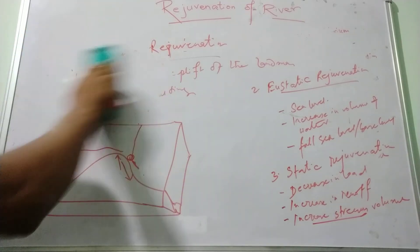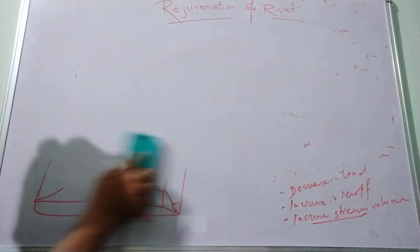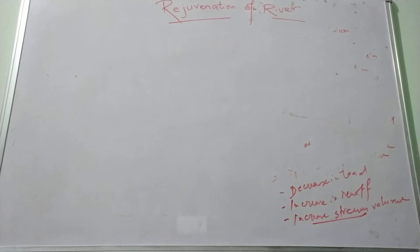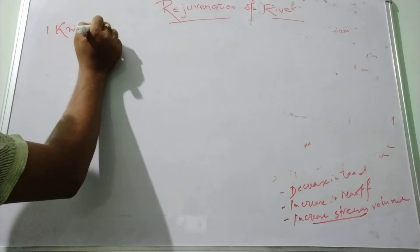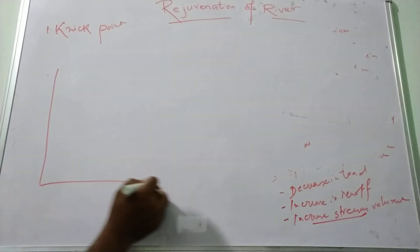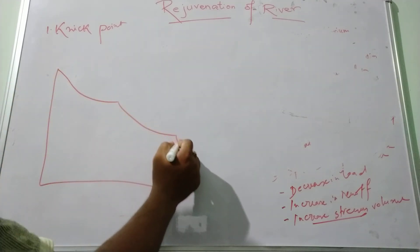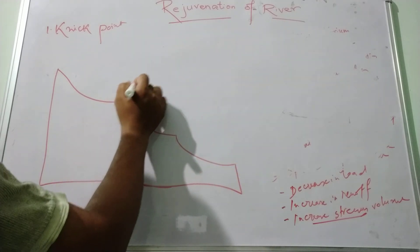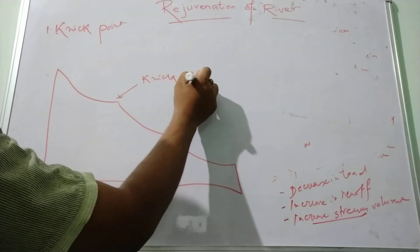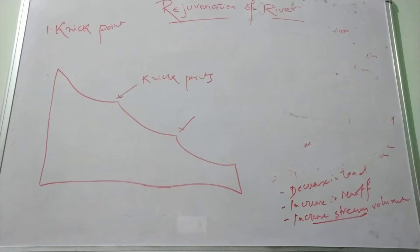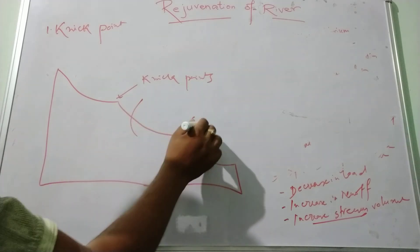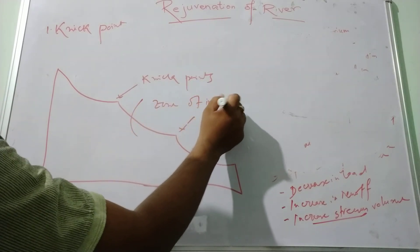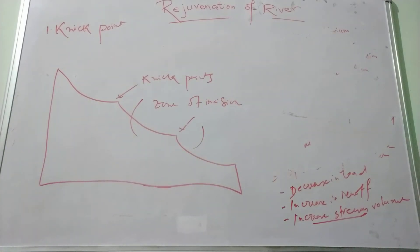Due to rejuvenation, different types of landforms are found in the river profile. The first is nick points. A nick point is a sharp break of slope found in the smooth long profile of a river, and this zone is known as the zone of incision. It is usually marked by the presence of a waterfall, and at this point vertical erosion associated with rejuvenation is at its greatest.